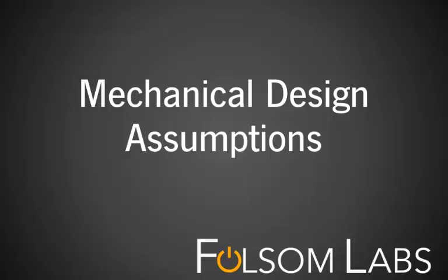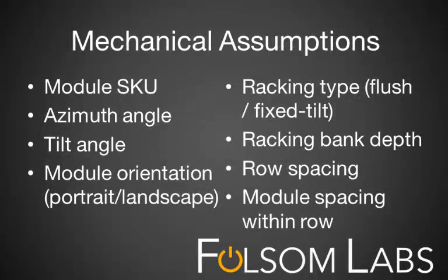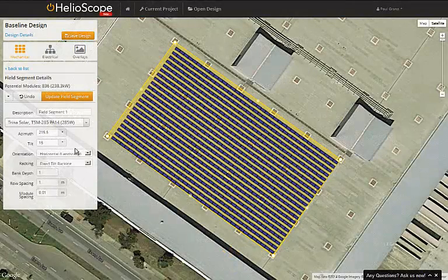Here I'll explain the mechanical design assumptions in Helioscope. Every mechanical design in Helioscope is based on a number of assumptions around the module, its orientation, and the racking design. I'll start with an existing design and change each variable one by one.